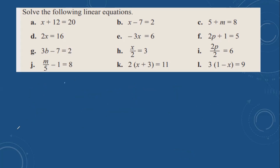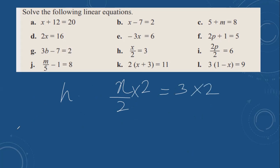Then h: x over 2 equals 3. So you can remove 2 by doing multiplication — the opposite of division is multiplication. The 2s cancel out, and x is equal to 6.